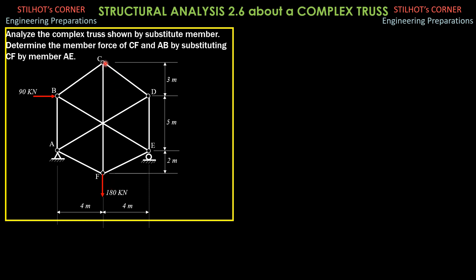So, I transfer CF to AE. But before that, compute the reactions. Summation forces X: AX is 90 kilonewtons to the left. Summation of moments about E equals 0: AY times 8 plus 90 times 5 equals 180 times 4, giving AY equals 33.75 kilonewtons, just like before. The vertical reaction at E: E times 8 equals 90 times 5 plus 180 times 4, giving 146.25 kilonewtons, as shown.